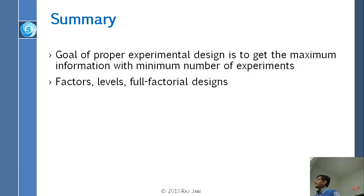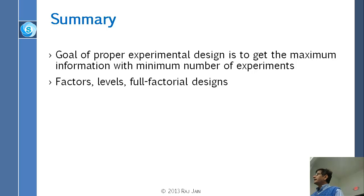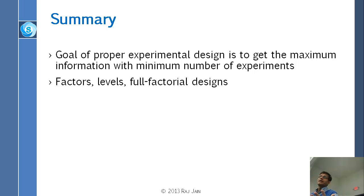The summary is that the goal of proper experimental design is to get the maximum information with the minimum number of experiments — both are important. You don't want to do all possible experiments; you want to do the minimum number of experiments and get the maximum information. Now you know these three words: factors, levels, and full factorial design. Full factorial design is simply all possible combinations.